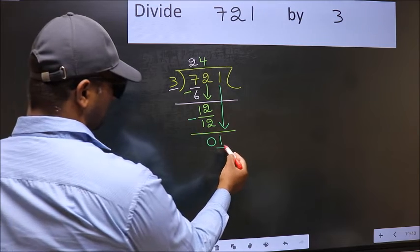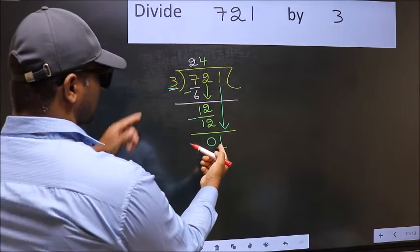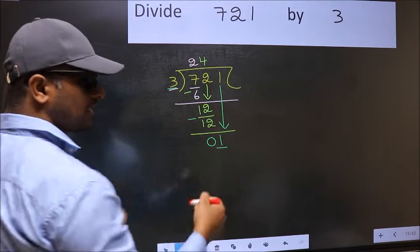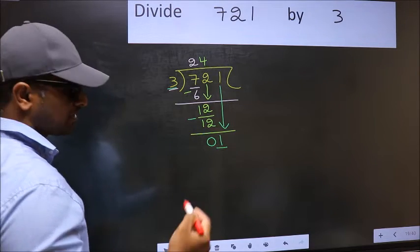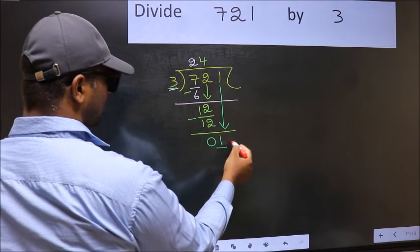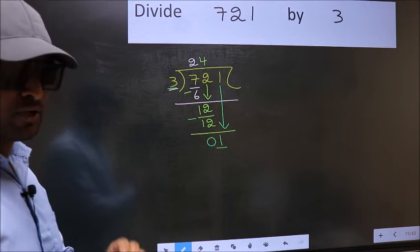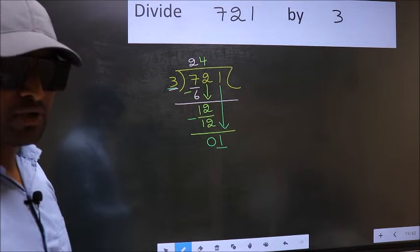Here we have 1 and here 3. 1 is smaller than 3. So what many do is, they directly put a dot and take 0 here. Which is wrong.